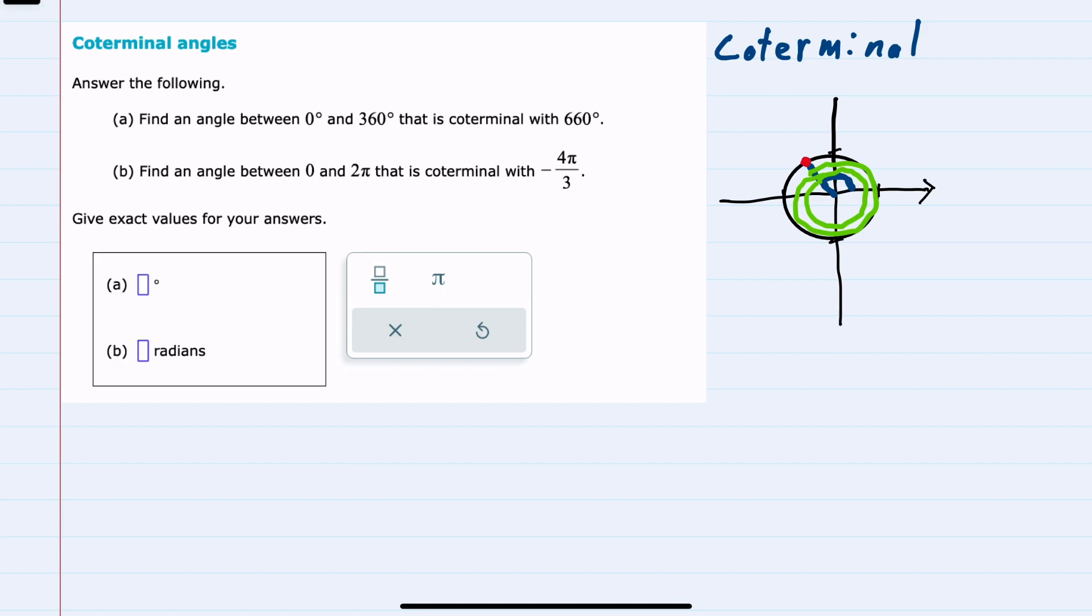So for coterminal angles, we can add or subtract multiples of 360 degrees. Or in radians, we can add or subtract multiples of 2π radians.